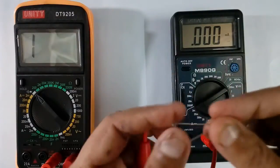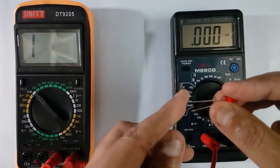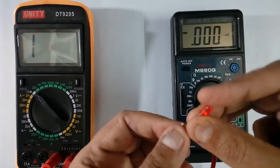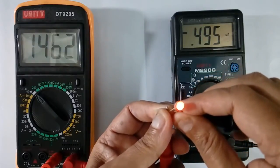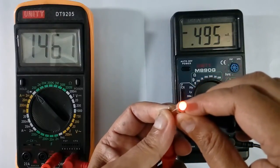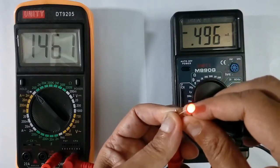Now I will check this big LED, 5 mm LED. Here also same. Big terminal, big wire is anode. Small wire is cathode. It is glowing. It is working. Drop is 1.46 volt at the current of 0.495 mA.